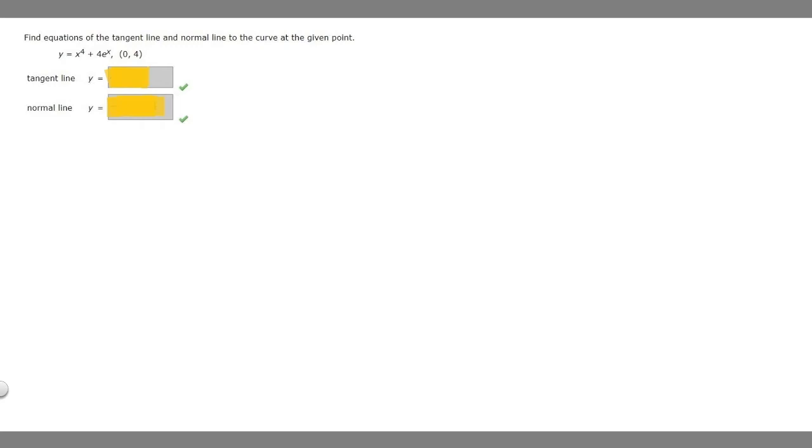So we're finding the tangent line and normal line. There are three things we need to find, then we'll plug them into the point-slope formula. We need an x value, a y value, and a slope. Luckily, we're given our x and y values. Our x value is 0 and our y value is 4. So all we need to find is the slope.